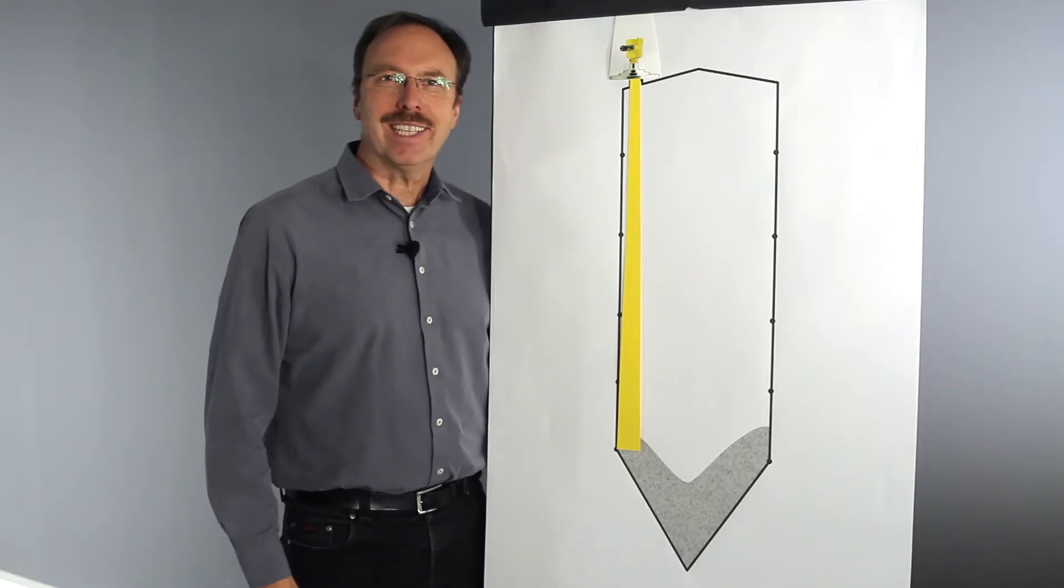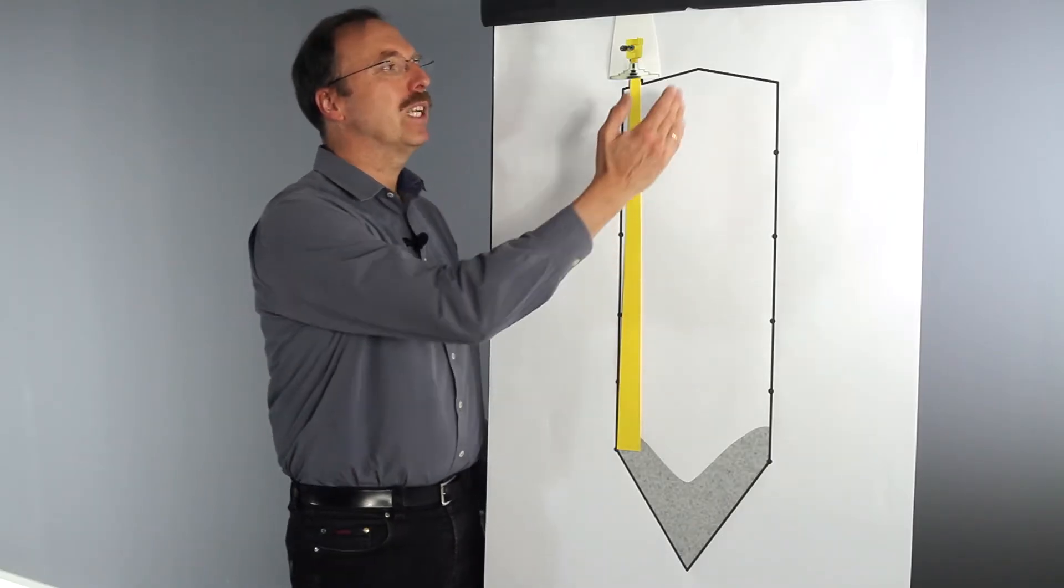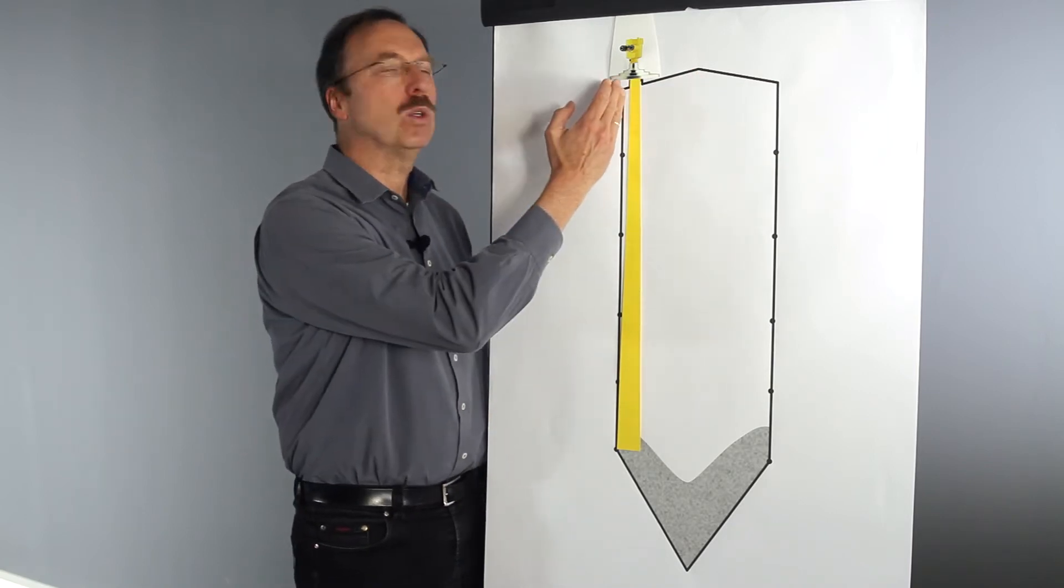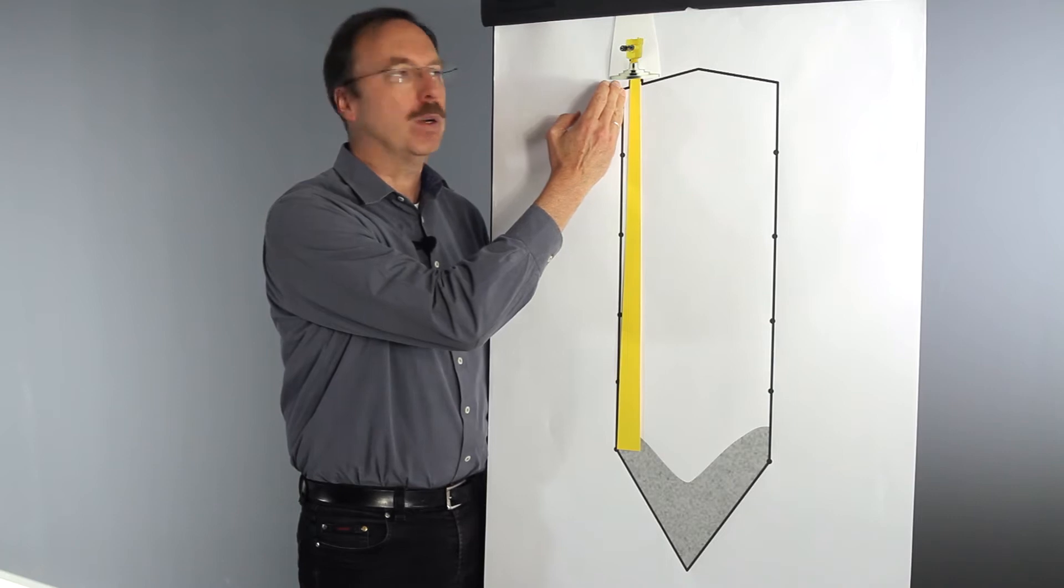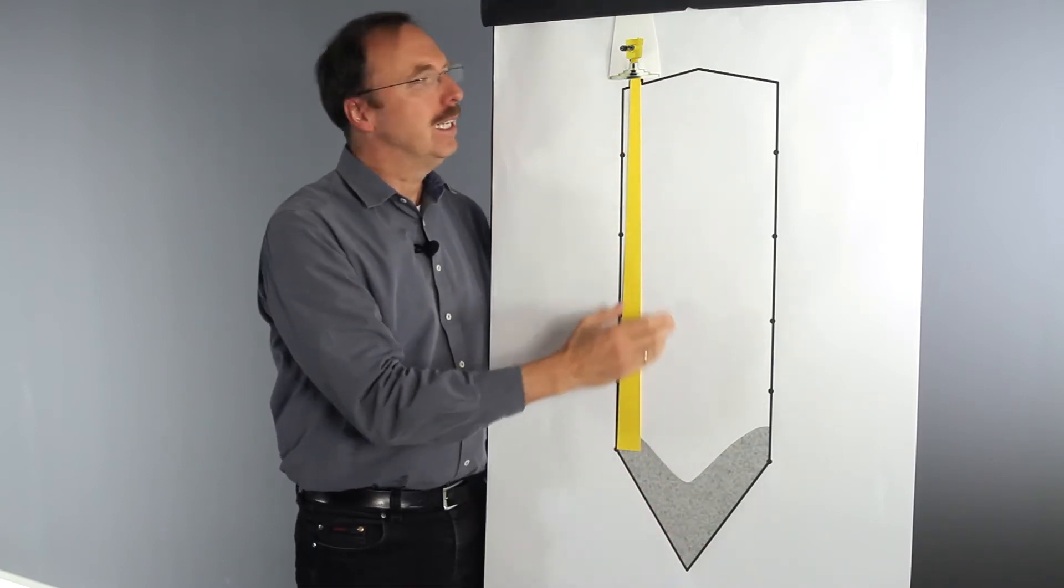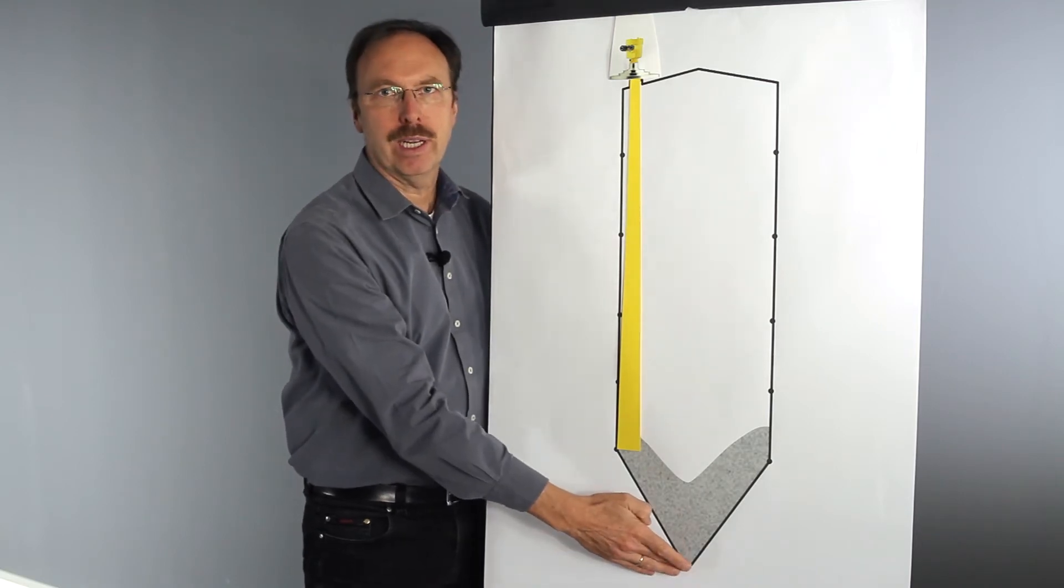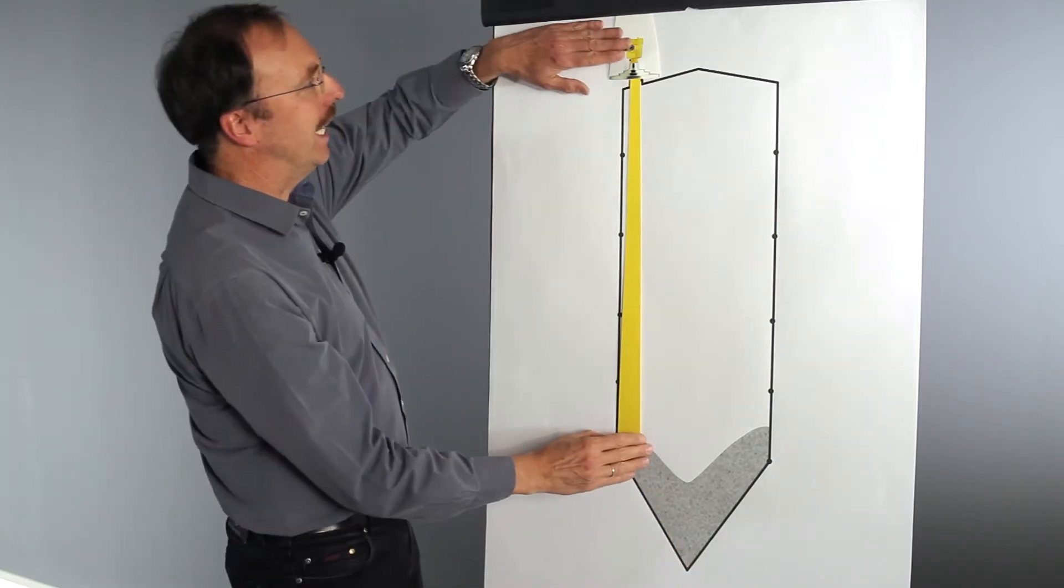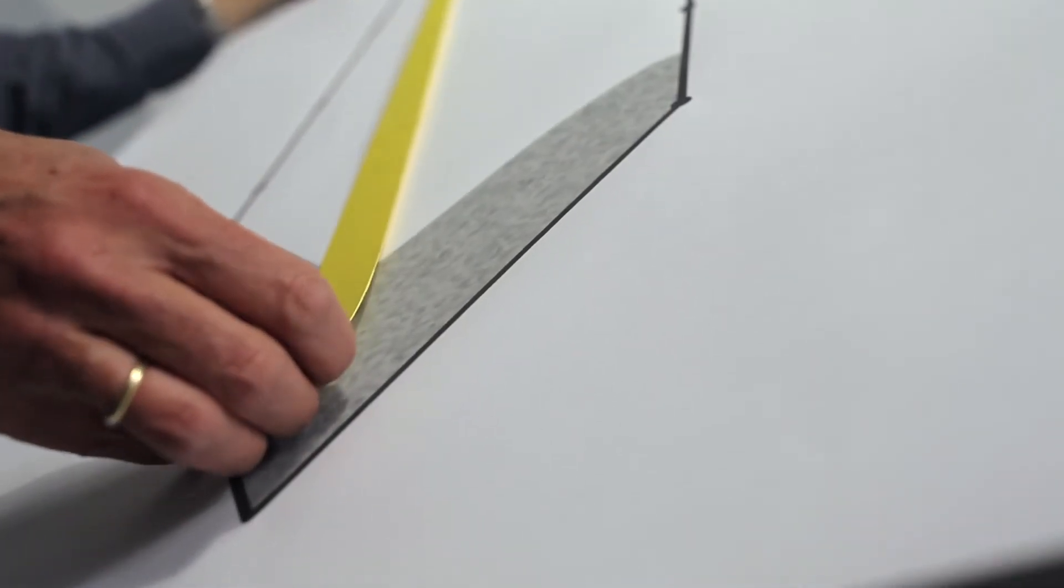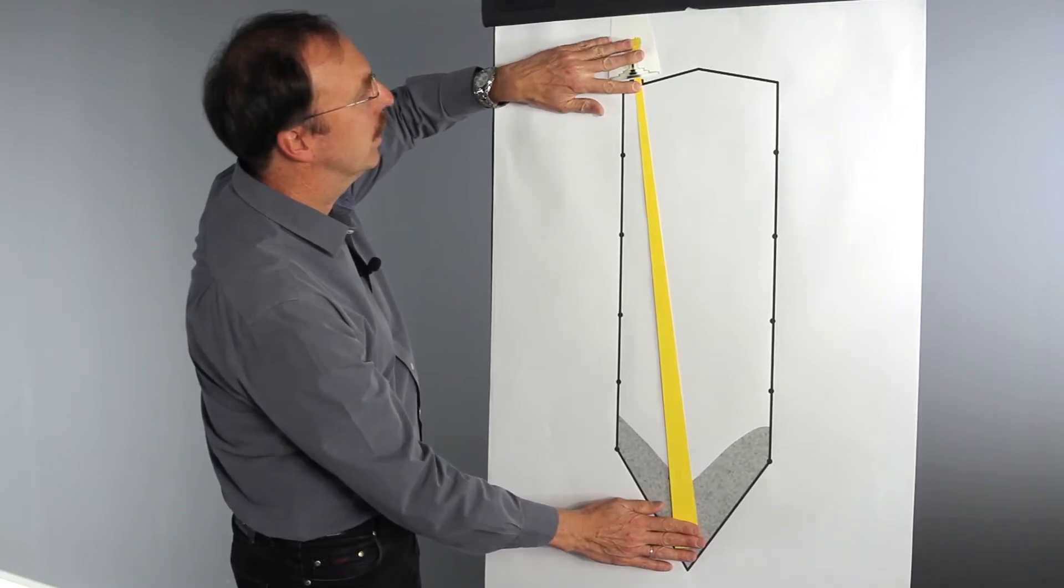To get the best measuring results, the sensor should not be mounted direct in the center of the silo. The best position is a distance between 200 and 500 mm from the wall of the silo. To get the complete volume, the sensor has to be aimed to the center of the outlet. Therefore we can aim the sensor and get the best position in this case.